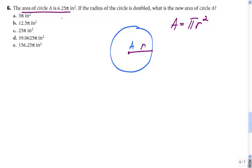But they're telling me that the area is 6.25 pi. So I have 6.25 pi should equal pi r squared.